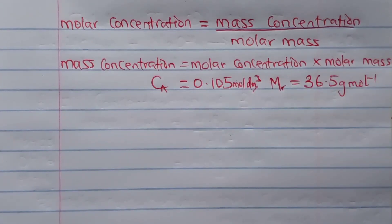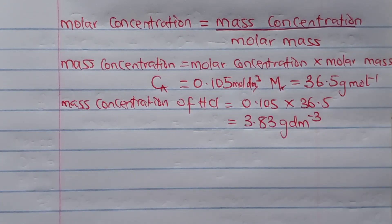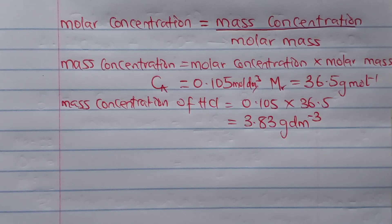Multiplying the two together gives us the concentration of HCl in grams per dm³. The last question asks for the reason why methyl orange was used. Methyl orange was used because this is a neutralization reaction between a strong acid and a strong base. Therefore, we can use any indicator — phenolphthalein, methyl red, or methyl orange.